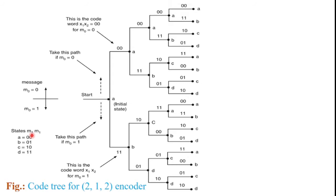Let us consider the initial state. The states are 00, 01, 10, and 11, labeled as states A, B, C, and D respectively. Initially, M1 and M2 is 00 — that is the initial state — and the encoder is in state A. So initial state 00 means M1 is equal to 0 and M2 is equal to 0. The code tree starts at a node.